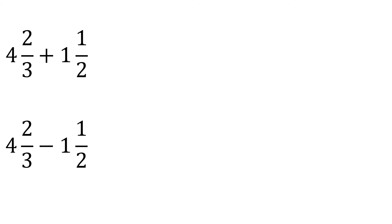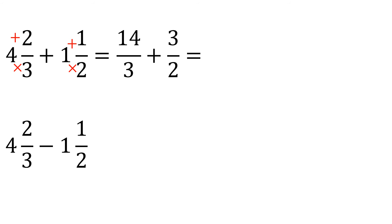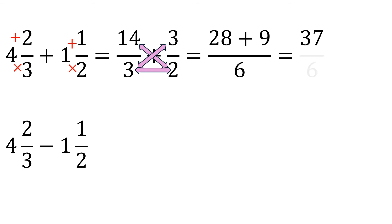Now if both given numbers are mixed numbers, first change both into improper form. Multiply and add to get the numerator: four times three is twelve, twelve plus two is fourteen, copy the denominator. Copy the plus, then do the same for the second term: two times one is two, plus one is three, copy the denominator. Then proceed to adding the two dissimilar fractions: three times two is six; fourteen times two is twenty-eight; plus three times three is nine. So twenty-eight plus nine is thirty-seven, copy the denominator six. Change this improper fraction to a mixed number: the answer is six and one-sixth.